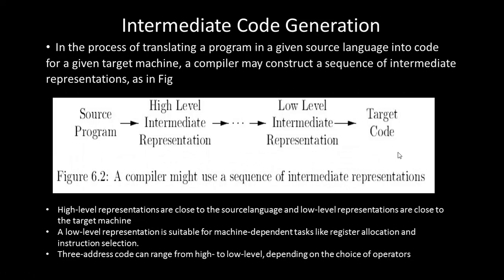In the process of translating a program from a source language into code for a target machine, a compiler may construct a sequence of intermediary representations. The intermediate representation consists of two major levels: high-level intermediary representation and low-level intermediary representation. High-level representations are close to the source language, while low-level representations are close to the target machine. Low-level representation is suitable for machine-dependent tasks like register allocation and instruction selection, and for that purpose we use three-address code.